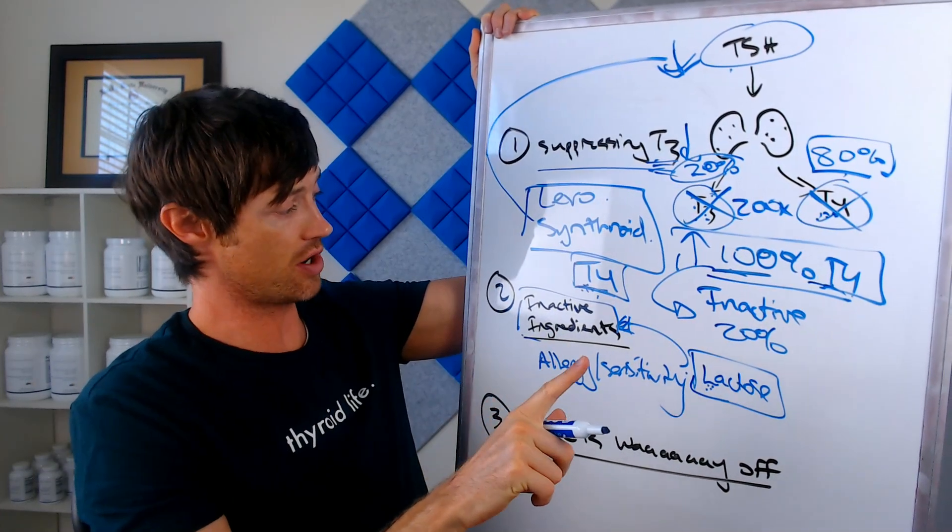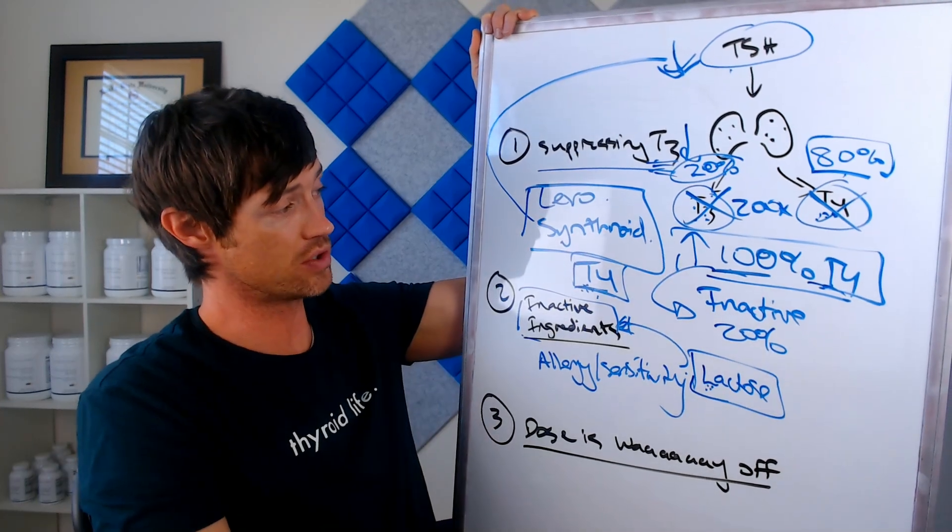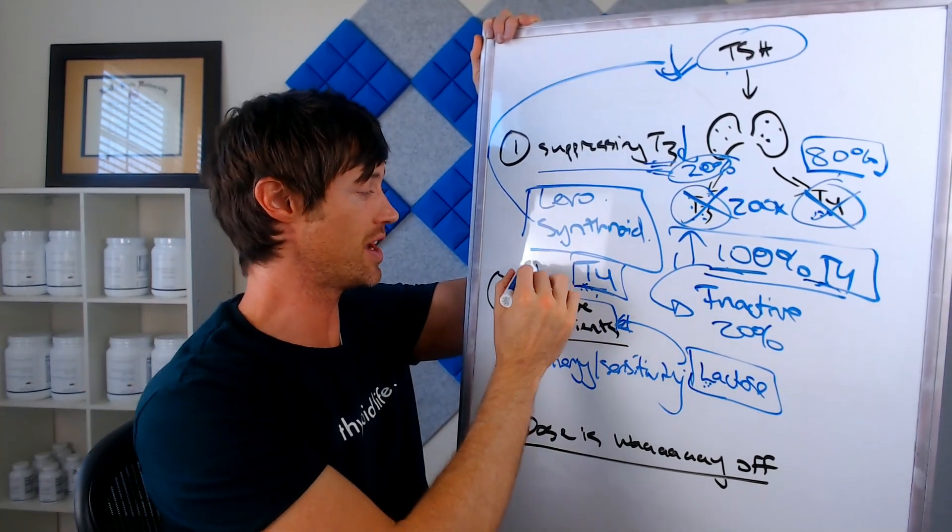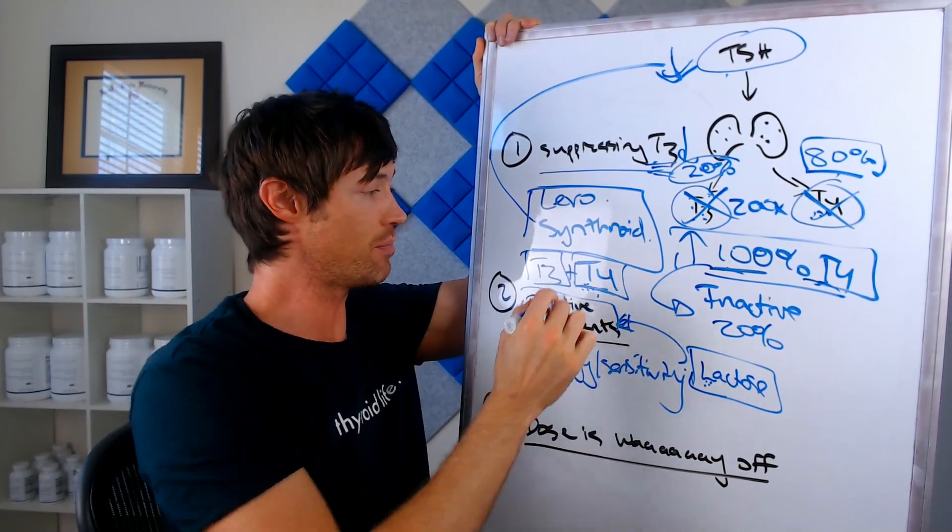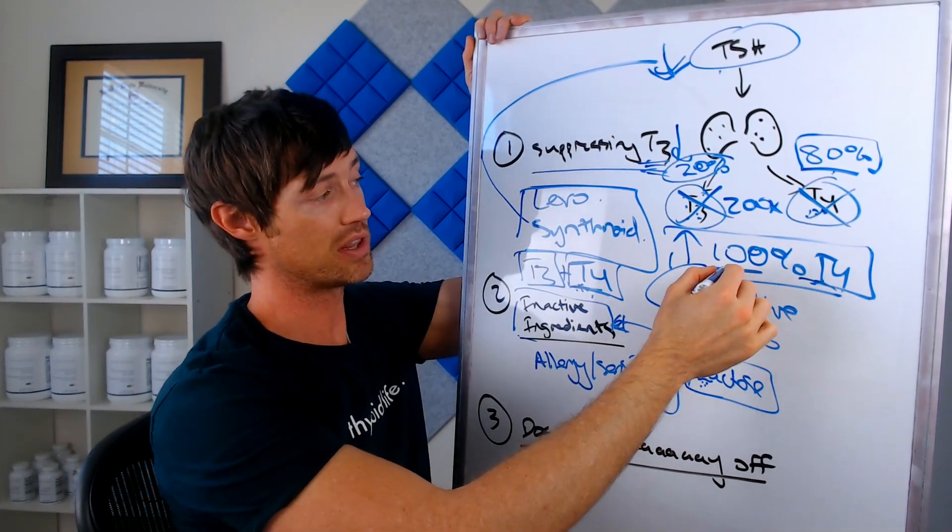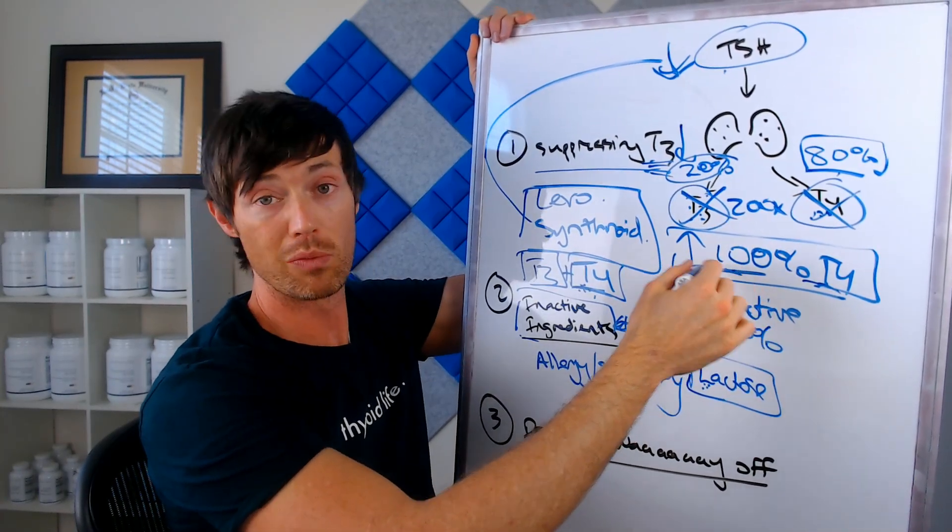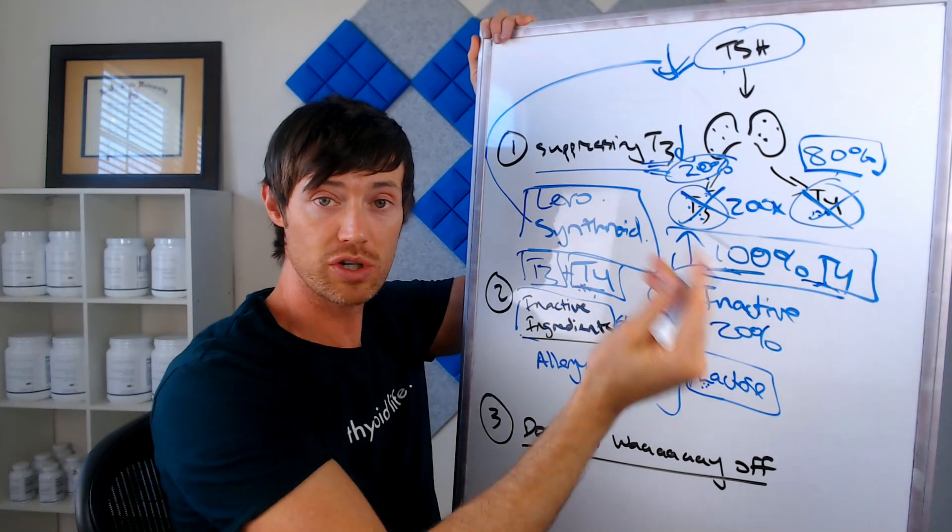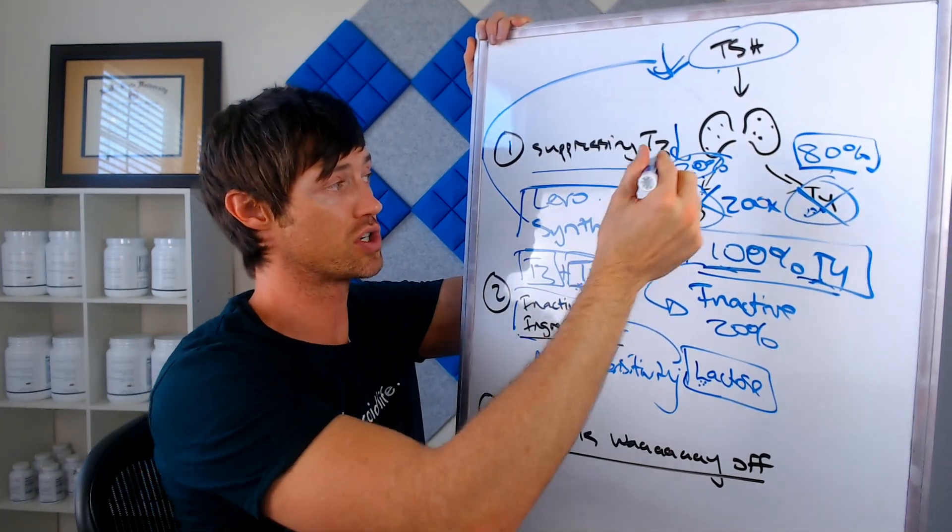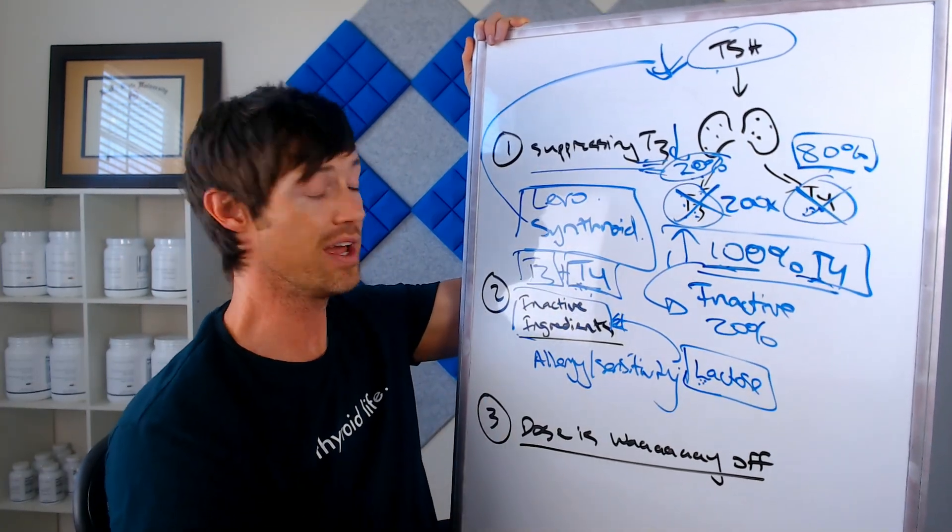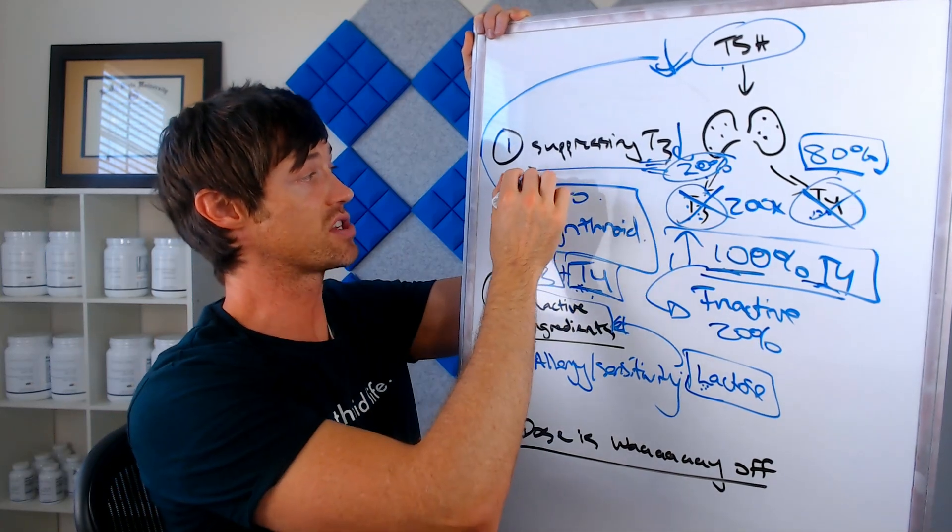Now we'll talk about solutions here. In fact, let me go back up to number one to talk about that solution. The solution here is to take T3 with your T4. It's very simple. Instead of trying to replace 100% of the thyroid lost with the thyroid hormone that's inactive, just balance out what it should be normally. So try and get a ratio closer to 20% T3 and 80% T4. And you can do that by combining thyroid medication. So that's the solution.